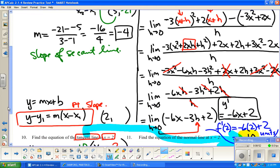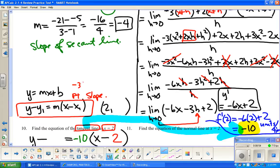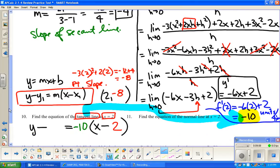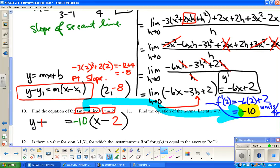So negative 3x squared plus 2x. This is 4 times negative 3, so negative 12 plus 4 is negative 8. So this is going to be y minus negative 8 and negative 10 times x minus 2. And that is it.